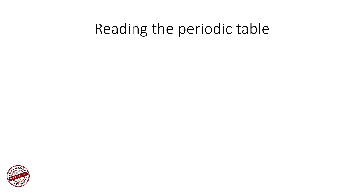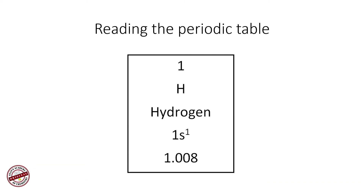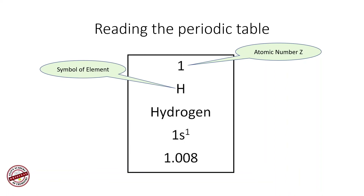Now we will take a quick look at how to read information on the periodic table. I have taken a single element box from the periodic table. Different periodic tables may have slightly different information, but generally all this information should be present. The number at the top is the atomic number — the number of protons present in the element.